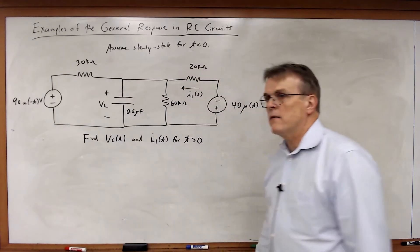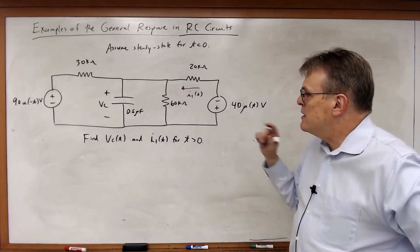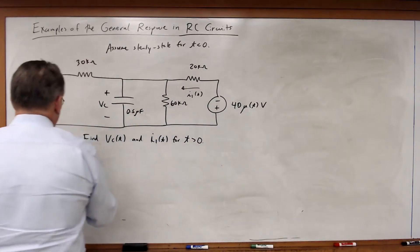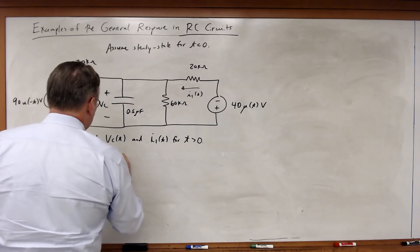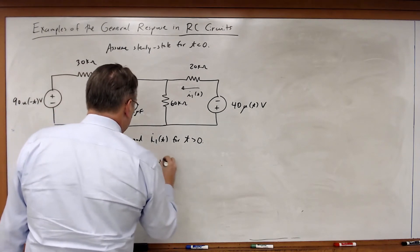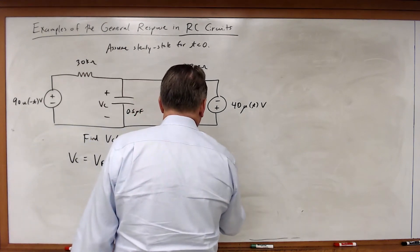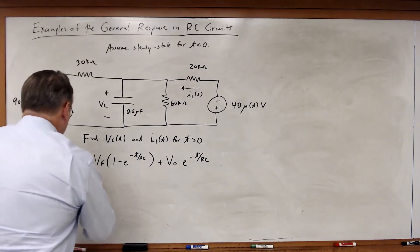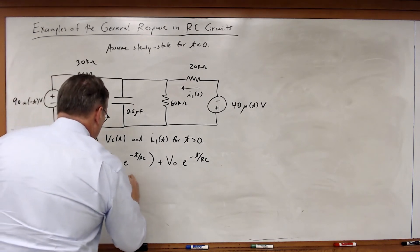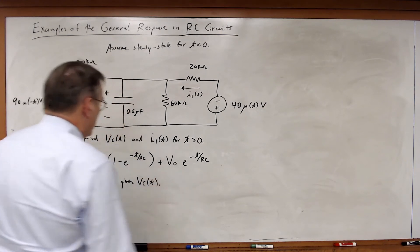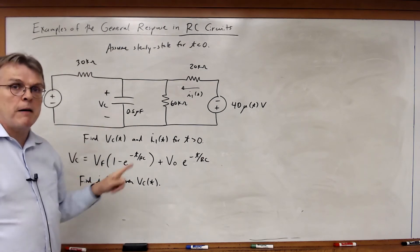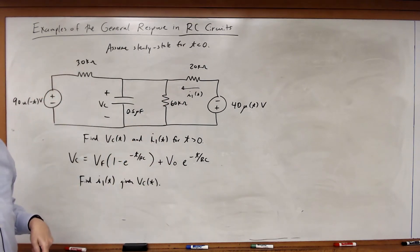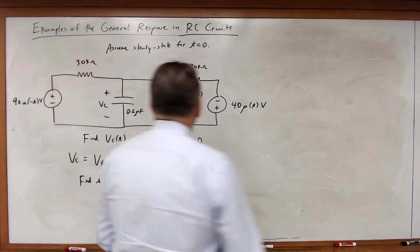In this case, I've got two quantities to find. VC is found from the general solution: VC equals VF times (1 minus e to the minus t over RC) plus V0 times e to the minus t over RC. I then find I1(t) given VC. So, just as before, work the voltage across the capacitor first, then derive any other currents or voltages needed from that capacitor voltage using standard circuit analysis techniques.